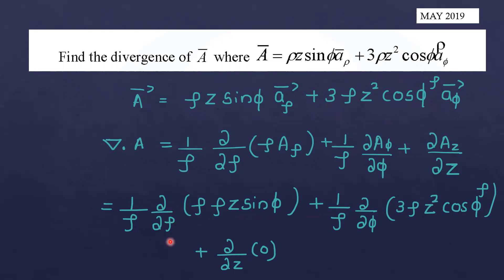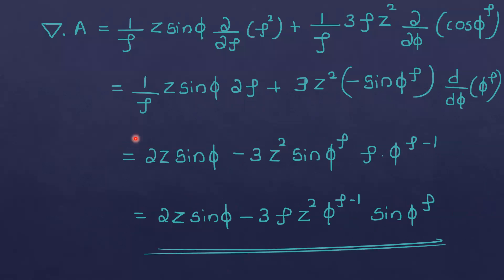Writing out the terms: 1 by ρ dou by dou ρ of ρ into Aρ, where Aρ equals ρz sinφ. Plus 1 by ρ dou by dou φ of Aφ, where Aφ equals 3ρz squared cosφ to-the-power-ρ. Plus dou by dou z of 0, since the Az component is not present. This gives 1 by ρ dou by dou ρ of ρ squared z sinφ.